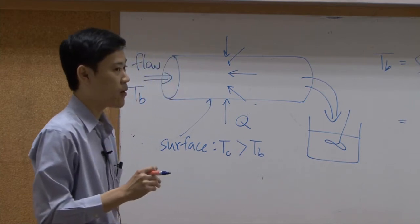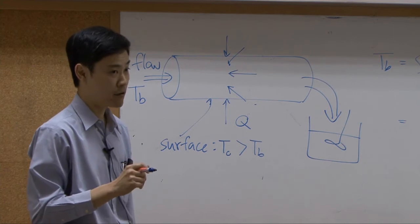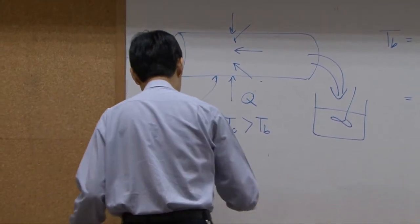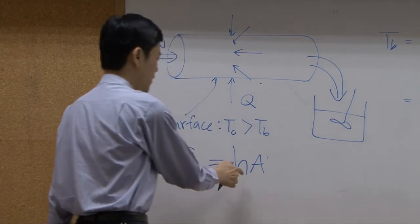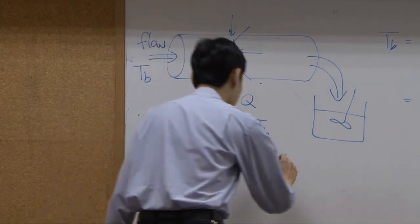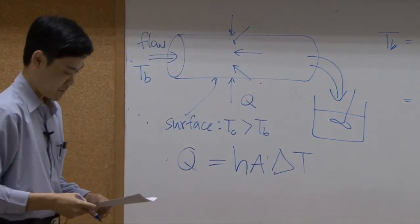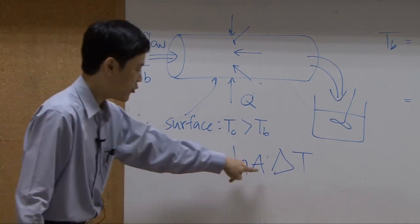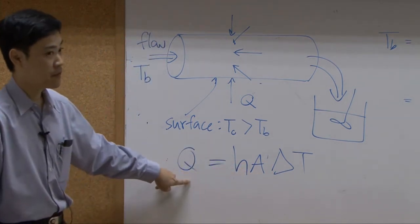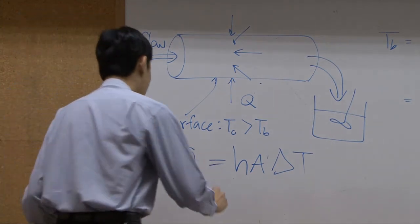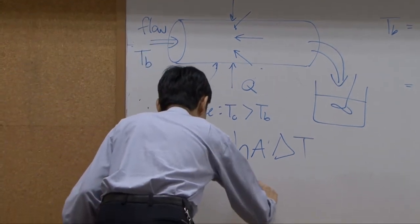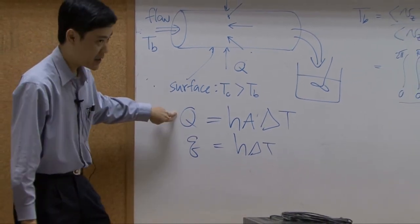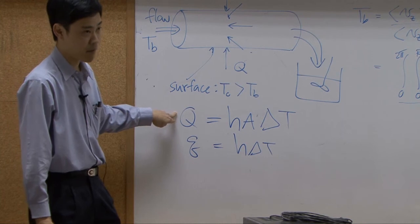So sometimes it is more convenient to use Newton's law of cooling, which we introduced earlier. Heat transfer Q equals the heat transfer coefficient H multiplied by area A multiplied by driving force ΔT. Sometimes written as q = H·ΔT, where small q is heat flux (heat transfer per unit area) and capital Q is the total heat flow.